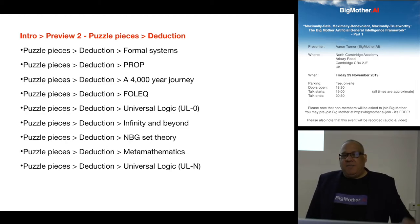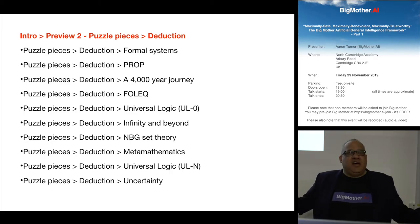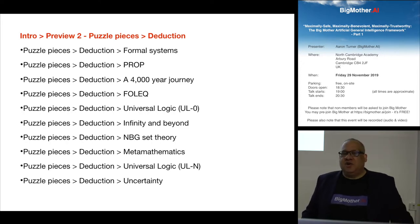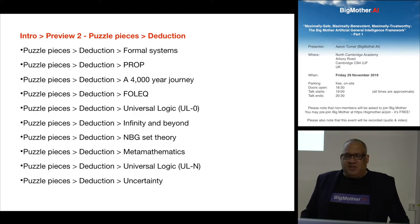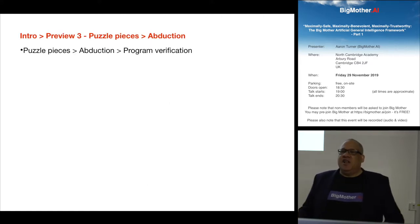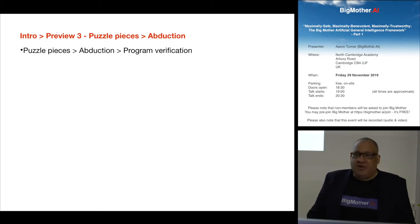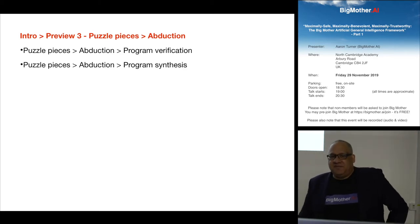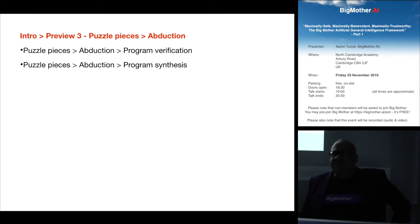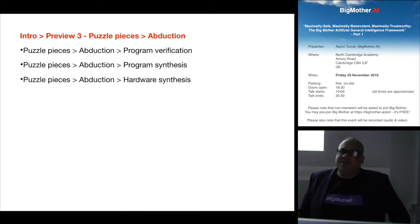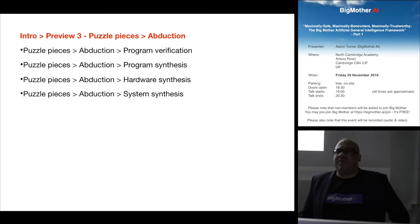Once the machine is interacting with the real world, everything is uncertain and probabilistic. So we'll be looking at adding uncertainty on top of MBG set theory, which is relatively straightforward but a complex topic. We'll be looking at abduction — a particular type — program verification, mathematical proof of correctness of programs (important from a safety perspective), program synthesis (the automatic generation of programs along with their proofs of correctness), hardware synthesis, system synthesis, and a generalization called witness synthesis.